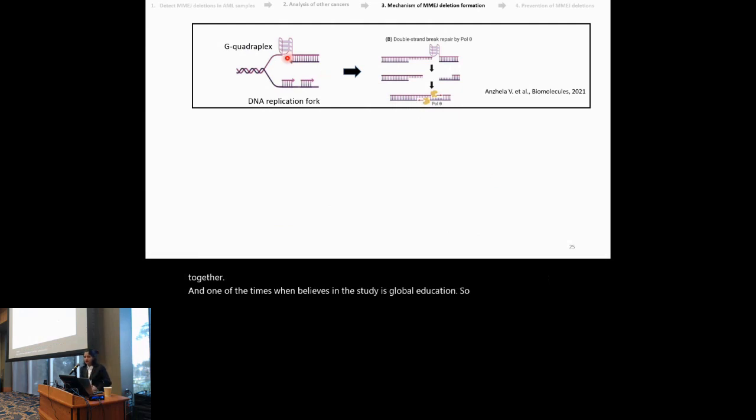So we thought that maybe during replication, the single strand of DNA forms a GC-quadruplex which hinders the DNA polymerase during replication and results in a double-strand break. And this double-strand break then could be repaired by MMG.